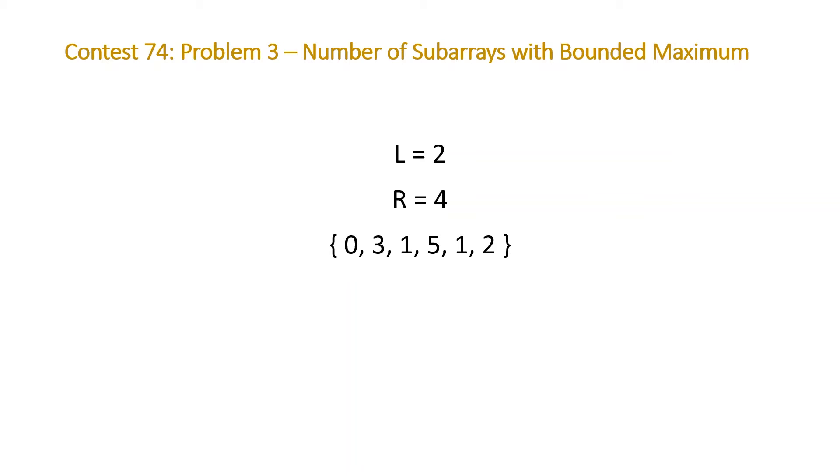If we take a look at those subarrays, you can see for the first three elements, you're able to generate four possible subarrays where the maximum element is between 2 and 4. You can see that 0 and 1 by themselves don't constitute subarrays that meet this requirement, but any subarray containing that three in the first three elements will give you a subarray that meets that criteria.